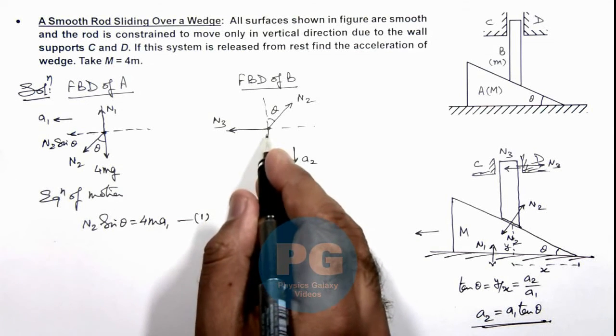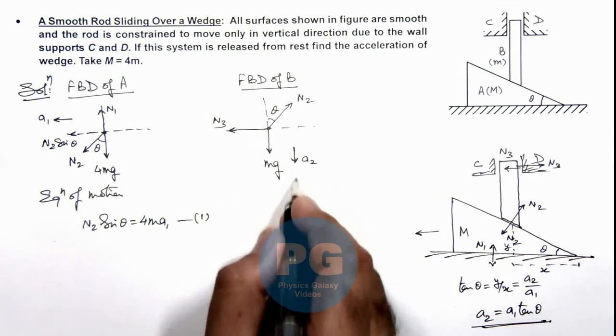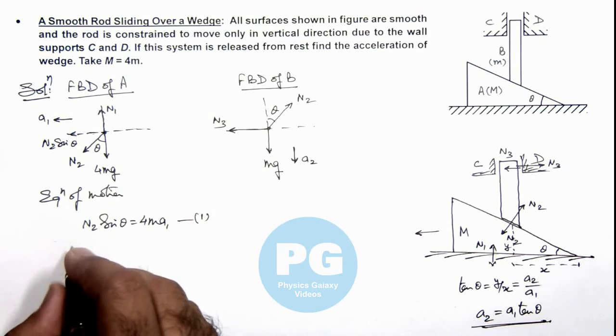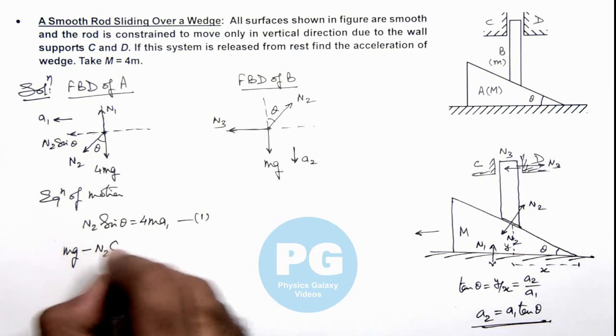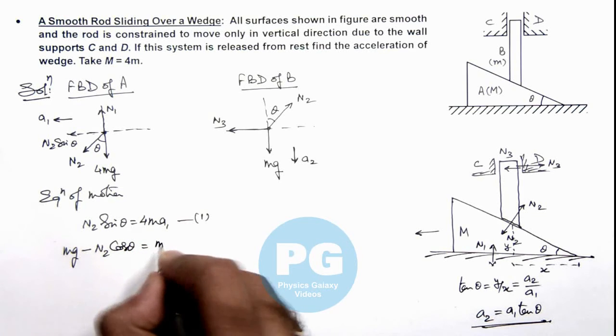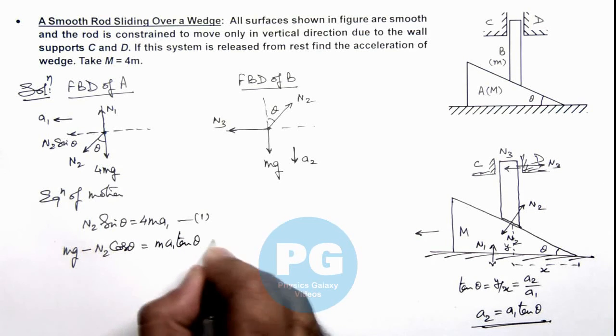And for rod, as it is going down we can write its equation as mg minus N2 cos theta is equal to m a2. And the value of a2 we can write as a1 tan theta. That is equation 2.